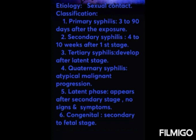Primary syphilis occurs 3 to 90 days after exposure. Secondary syphilis occurs 4 to 10 weeks after the first stage. Tertiary syphilis develops after the latent stage. The latent phase appears after the second stage with no symptoms or signs present. Quaternary syphilis refers to atypical malignant progression of tertiary neurosyphilis in immunocompromised HIV individuals. Congenital syphilis is secondary to fetal transmission.